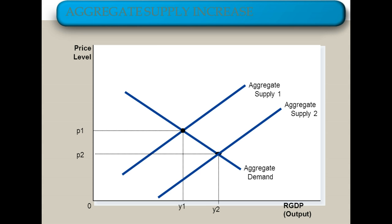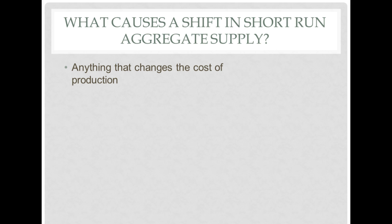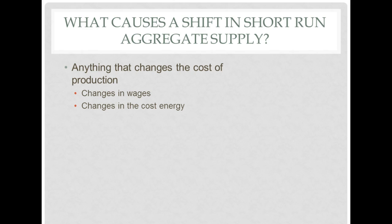What causes a shift in short run aggregate supply? There are two overwhelming components. The first is anything that changes the cost of production — similar to what we learned in microeconomics. If it is more expensive or harder to produce a good, aggregate supply decreases. For example, a change in wages: if workers get large wage increases, that raises the price of producing things and decreases aggregate supply. Similarly, a change in the cost of energy — if there's a gas shortage and gasoline prices rise, that's a major component of producing almost every product, so aggregate supply decreases.